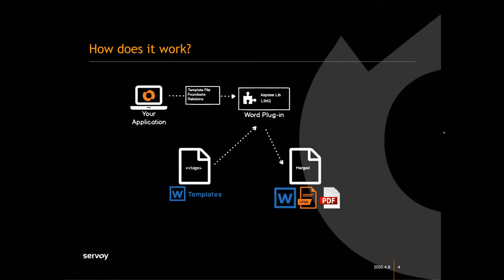Let's go back to some slides. Can everybody see my screen again? So let's start with a diagram of just how the different pieces fit together. You've got your Servoy application and then you'll be using the Word plugin. Like you saw in Paul's demo, you'll pass as parameters the foundsets and relations you want, and the path to the Word template file — which is just a normal Word file. The plugin will then open up that file, merge your data, and write it back out to a file of your choice. It can merge into another Word document, produce HTML, PDFs, and a couple other formats as well.